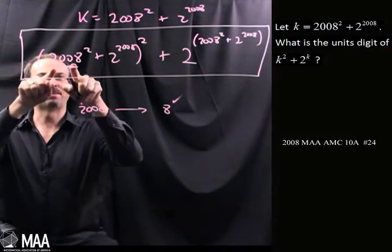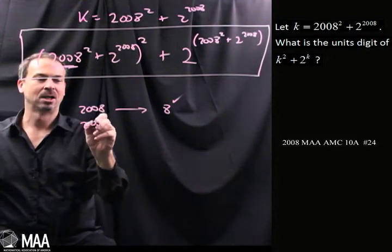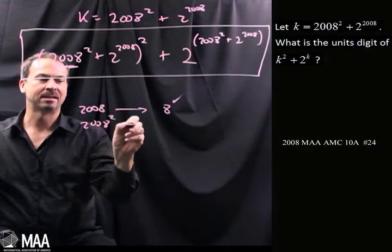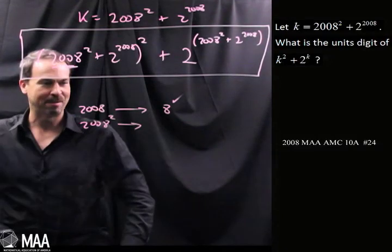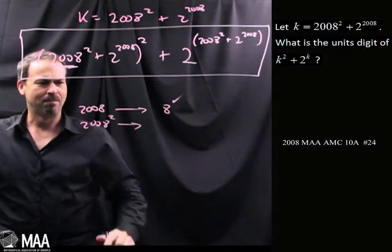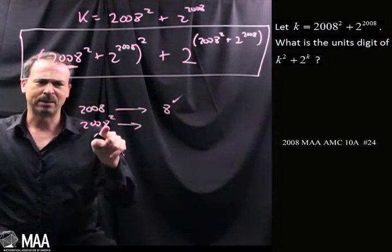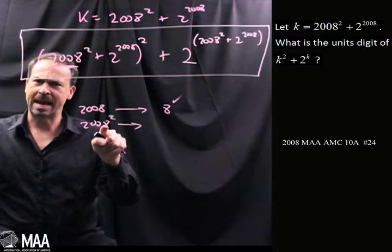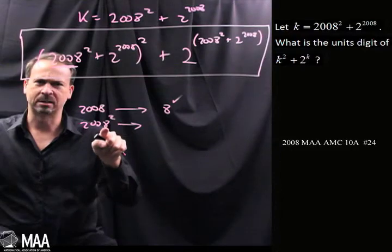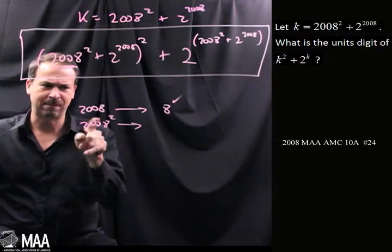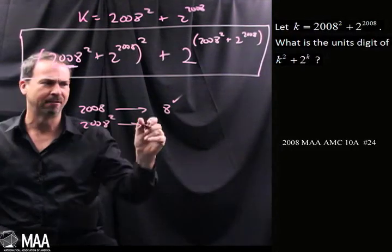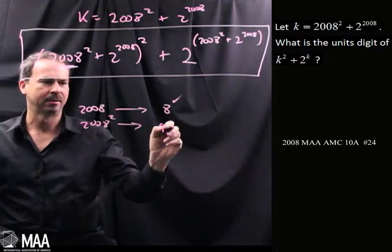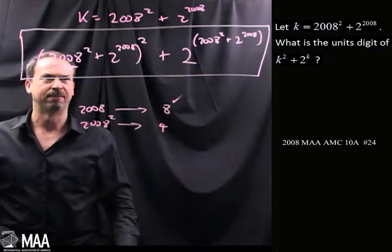What about 2008 squared? Do I know the last digit of that? Something that ends in an 8, squared, is going to end in basically 64 — there might be carrying going on, but I bet that ends in a 4. So that piece ends in a 4.